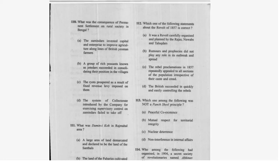Question 103: Which statement about the Revolt of 1857 is correct? Option C: the rebel proclamation of 1857 repeatedly appealed to all sections of the population irrespective of their caste and creed. Question 104: Which was not a Panchsheel principle? Option C — nuclear deterrence — was not part of Panchsheel. Question 105: Who organized a secret society of revolutionaries named Abhinav Bharat? VD Savarkar — option D is correct.